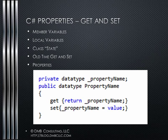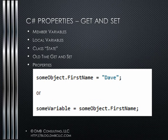Syntactically, you access them as though they were variables. In fact, if you looked at a property in intermediate language — that's the language that all .NET code compiles to — you would see that it is just a method. To access a property from within your code, you would access it as some object dot first name equals Dave, or some variable equals some object dot first name. The only reason they exist at all is to keep the outside world — that is, outside the class — from stomping on the member variables of the class directly.